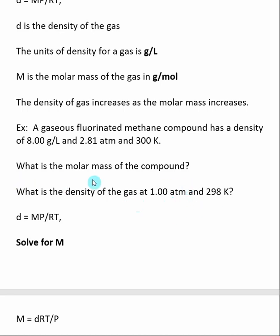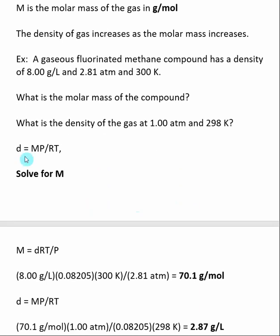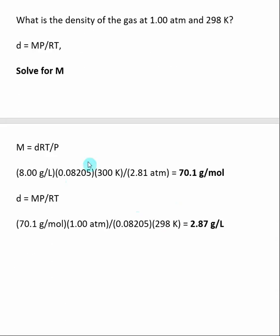For the first part of the question I am looking for the molar mass of the compound. I take my initial density formula and solve for M, the molar mass of the gas. Here we see that M is equal to dRT divided by P.